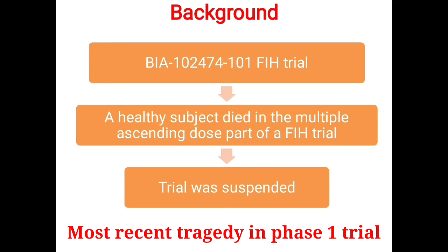It all started with one of the most recent tragedies which happened in a first-in-human trial of a newly developed FAH inhibitor. A healthy subject died in the multiple ascending dose part of this trial. There were a total of six subjects in the study, and after five administrations, one subject got into a serious condition and was hospitalized. However, the investigator did not consider this as a possible drug relationship, so he continued the remaining five patients on the sixth dose. After giving the sixth dose, these five patients also got hospitalized, and the first one who was hospitalized died.